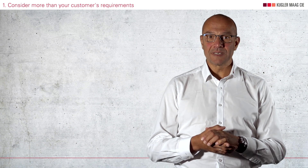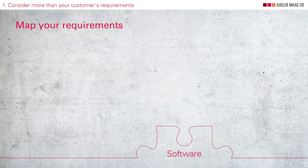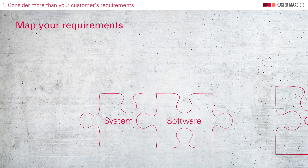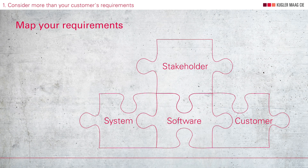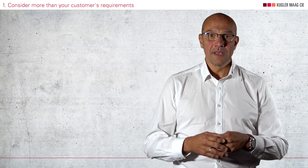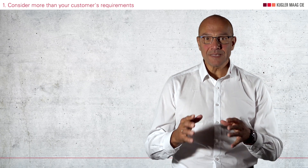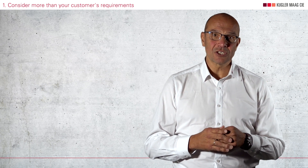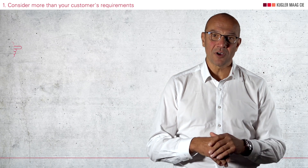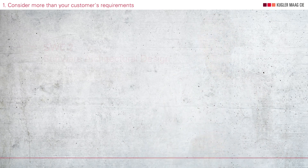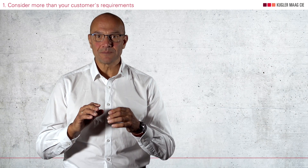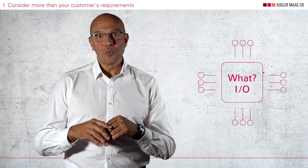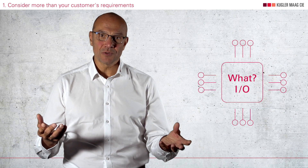For documentation purposes, map the system requirements — or in case of software development only, the customer and other stakeholder requirements — to your software requirements that reflect your internal view of the software. The software requirements, in turn, form the basis for the software qualification test and all downstream processes, like software architecture. The software requirements describe the software as a black box: the what — what should the software do, not how should it do something.